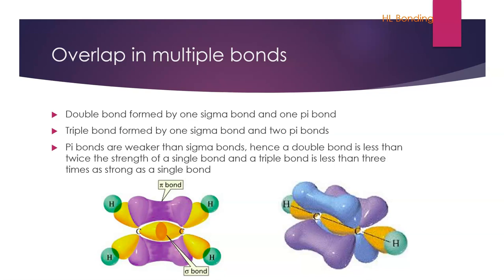So as we were just saying, a double bond is formed by one sigma and one pi bond, and a triple bond is formed by one sigma and two pi's. Because pi bonds are weaker than sigma, we get the fact that the double bond is less than twice the strength of a single bond, so that idea that if it was two true double bonds it would be twice the strength of a single, but it's not. And a triple bond is less than three times as strong as a single.